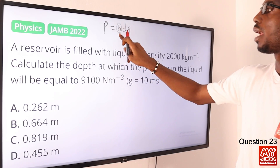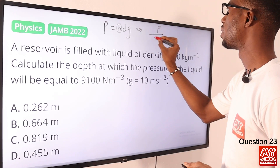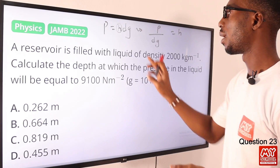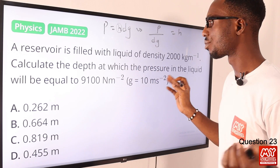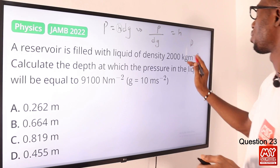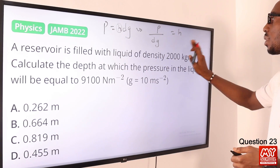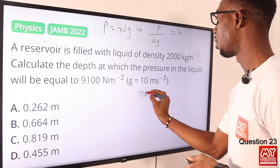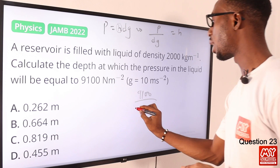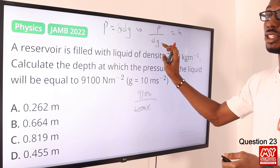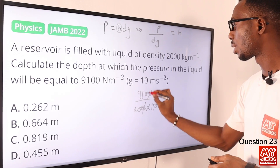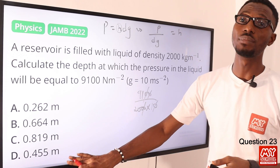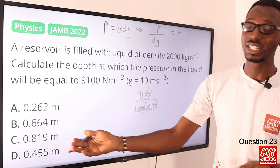Making H the subject of the formula gives H = P over DG. The pressure is 9,100, density is 2,000, and gravity is 10. Cancelling zeros: 91 over 200, which gives 0.455 meters. So the depth where we have this experience is option D — option D is the correct option.